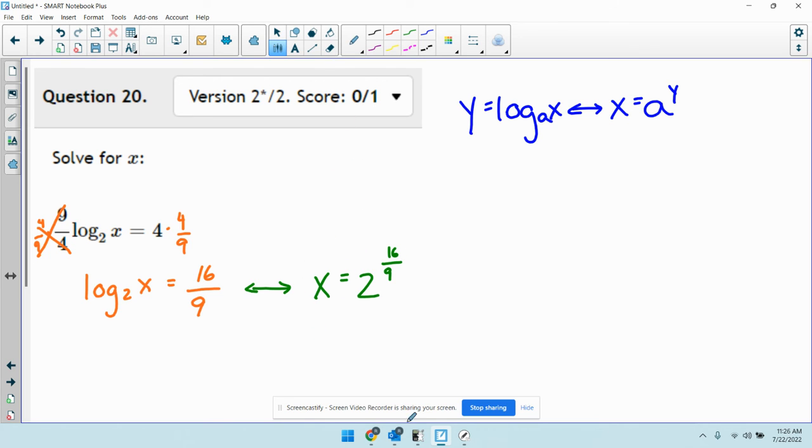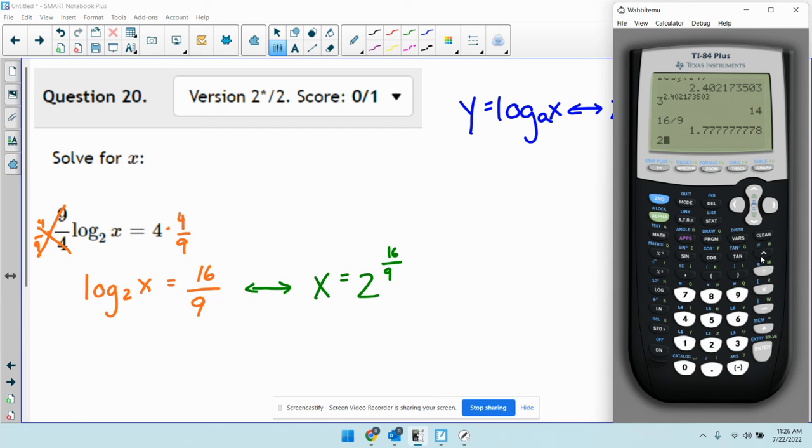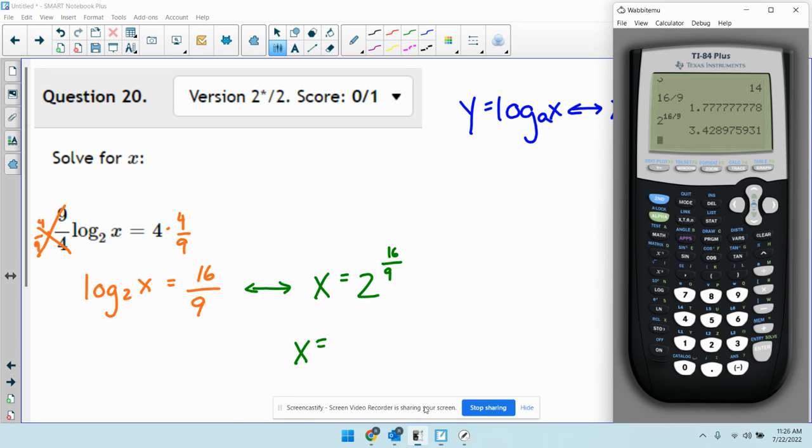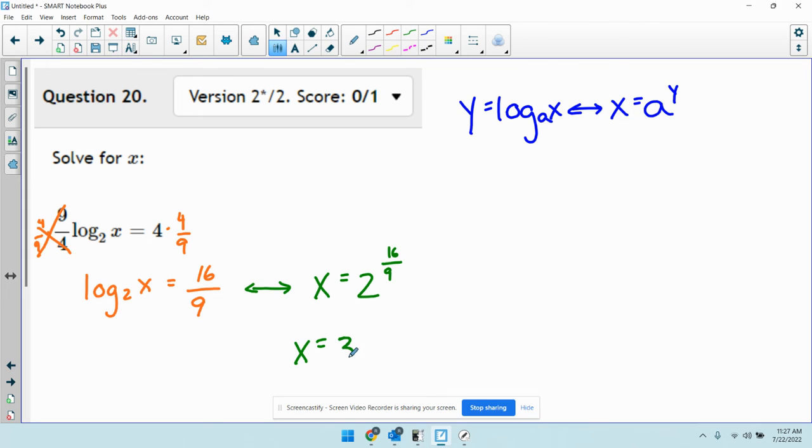So now I can figure out what x is just by doing 2 to the power of 16 divided by 9. Make sure you're just up in the exponent like that. And we get x equals 3.42. We'll do 3.429.